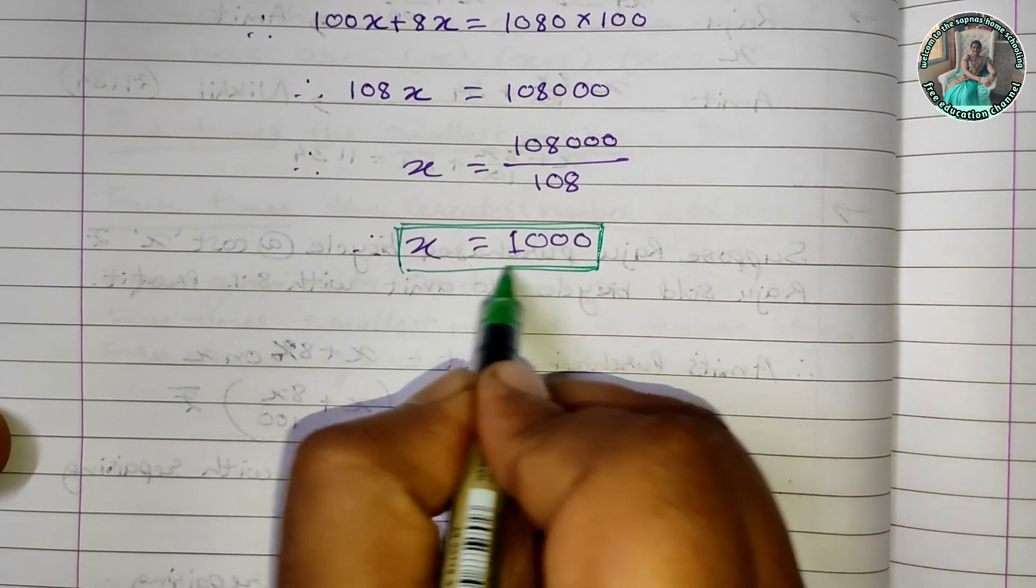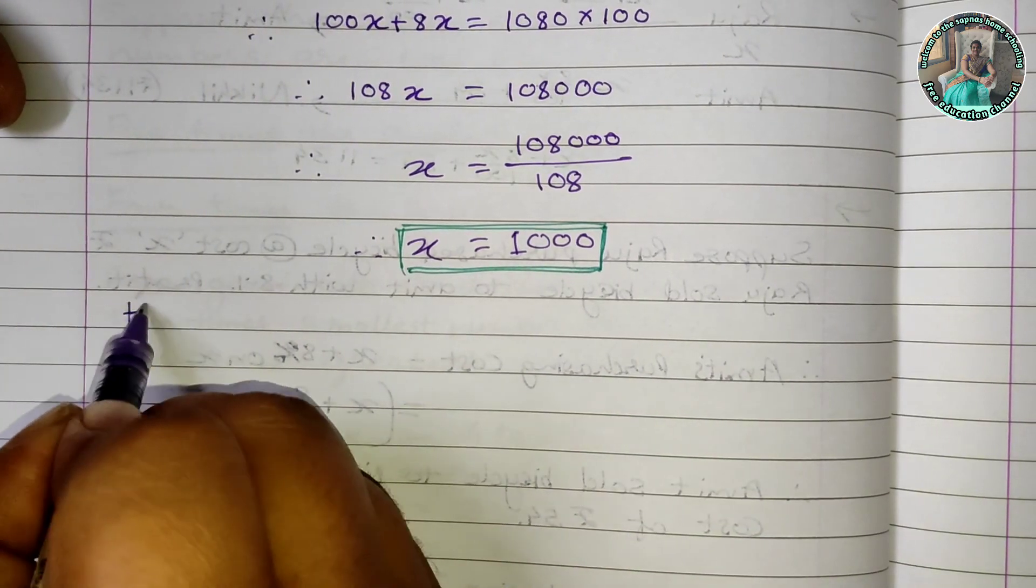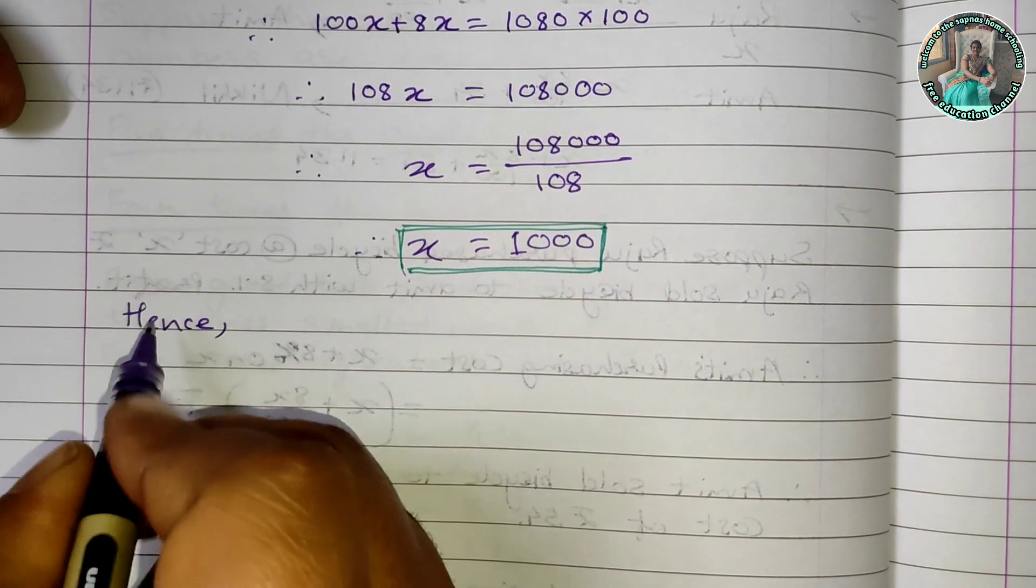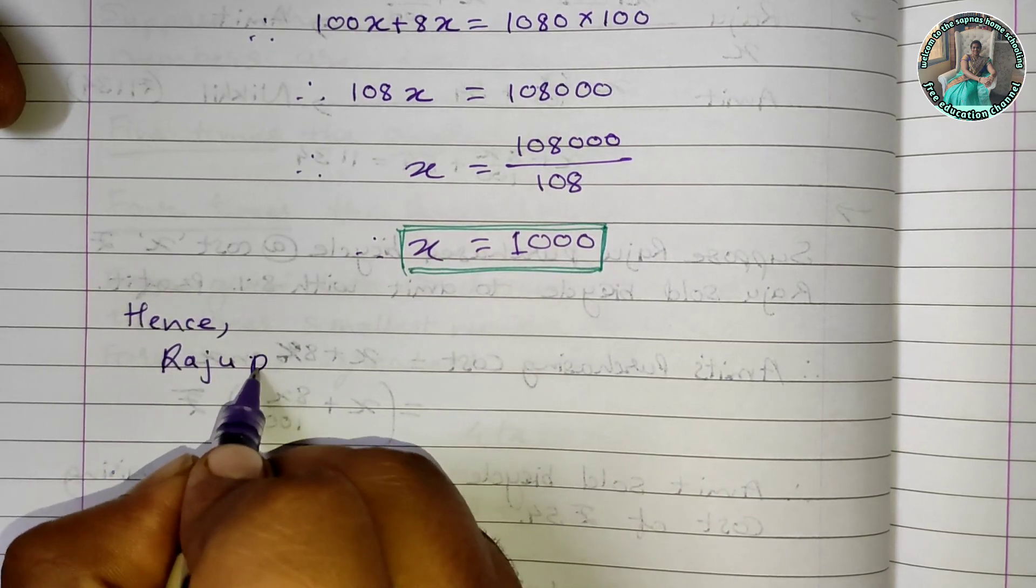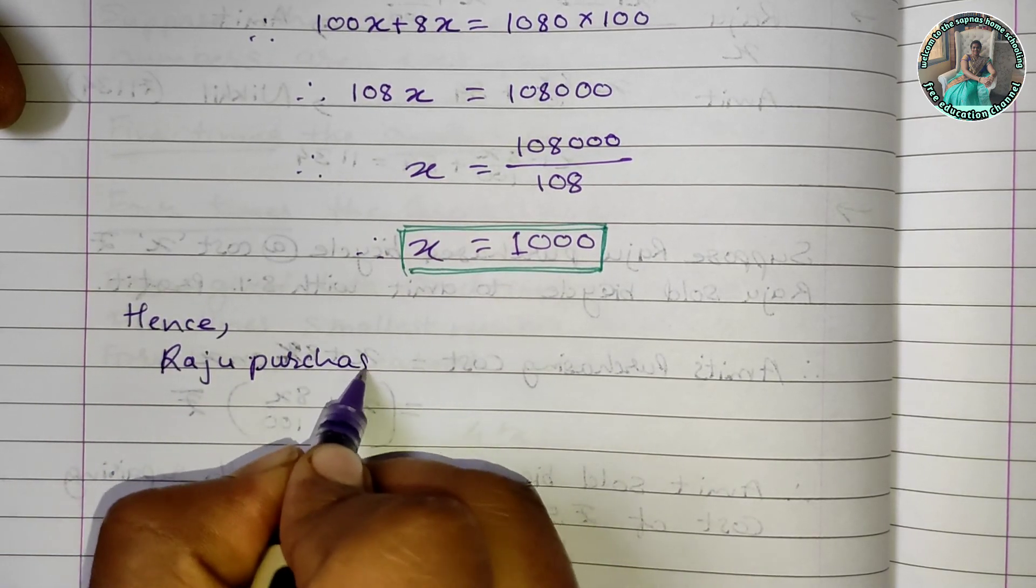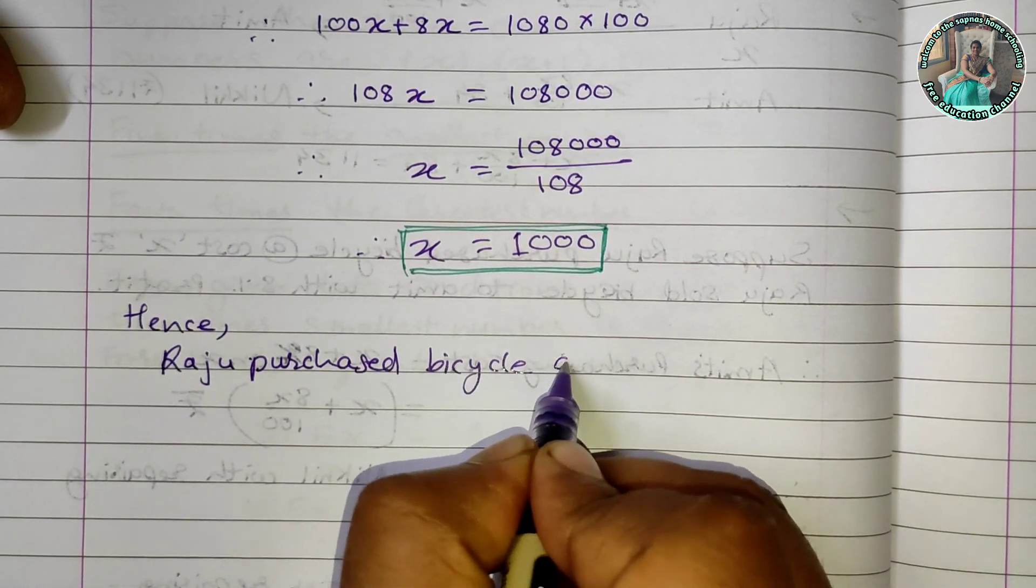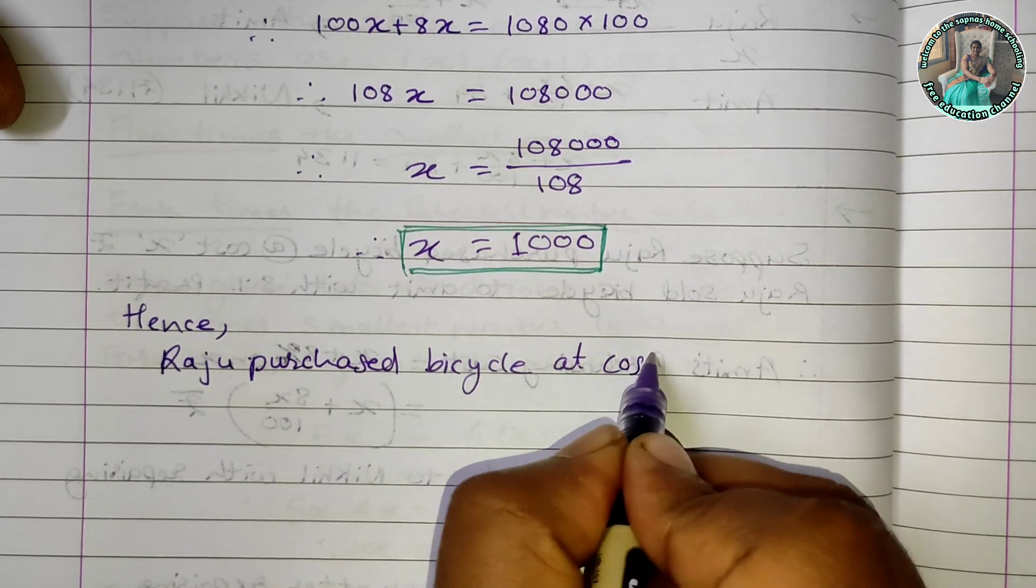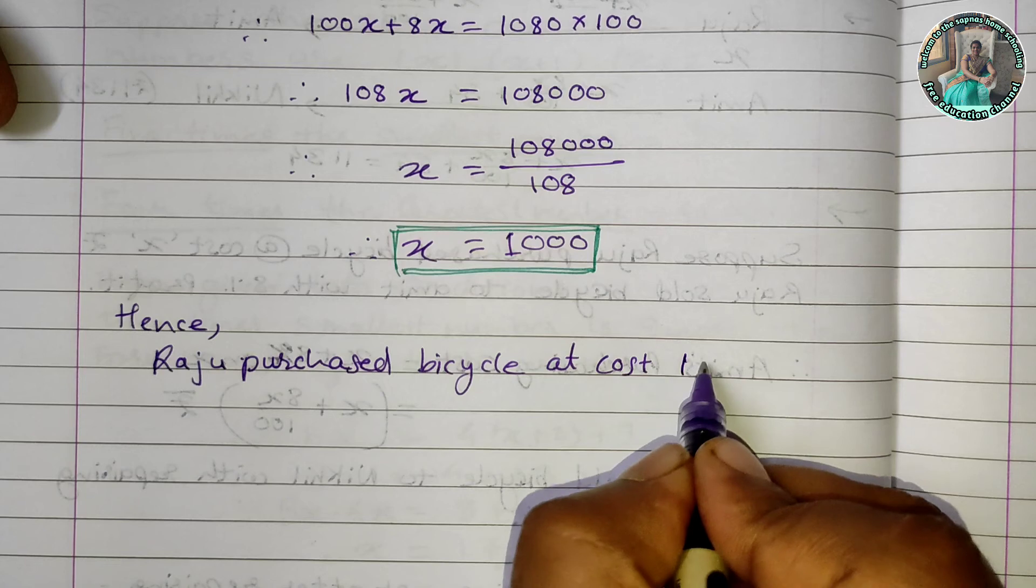x is equal to Raju's purchase cost. Hence, Raju purchased the bicycle at a cost of 1000 rupees.